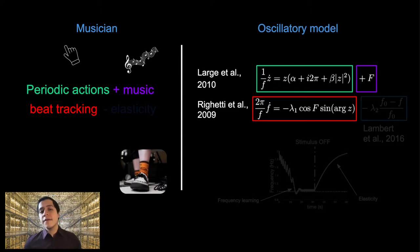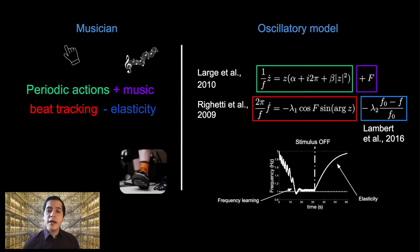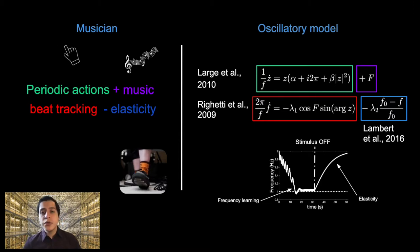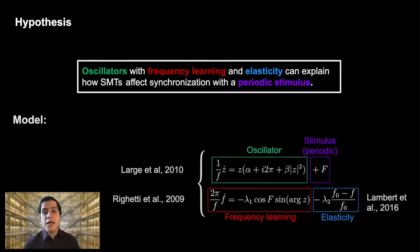Furthermore, an individual's spontaneous motor tempo is unique and remains stable before and after musical performance. To mimic this behavior, we added an elasticity parameter which allows the oscillator to return to its original frequency after being stimulated. Lambda 2 here is the strength of that elasticity parameter. Ultimately, our model supports our hypothesis that non-linear oscillators with elastic frequency learning mechanisms can explain how human spontaneous motor tempos affect synchronization.